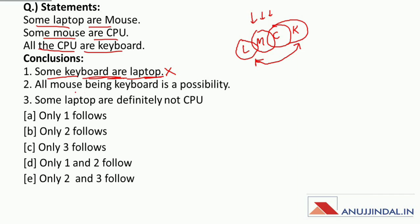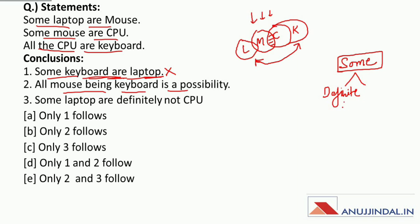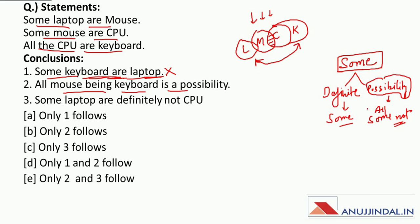This must be false. Now next is: all mouse being keyboard is a possibility. The mouse and keyboard relation is one of 'some'. If the concepts are clear, in the case of 'some', there can be two possible answers for possibility: that is 'all' and 'some not'. So since there is a relation of 'some' between mouse and keyboard, the two possible answers are 'all' and 'some not'. The conclusion that all mouse being keyboard is a possibility is absolutely correct.